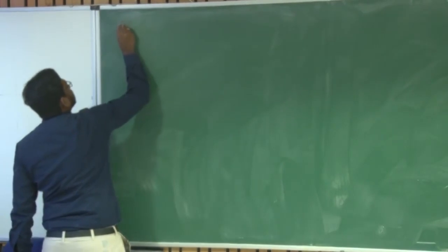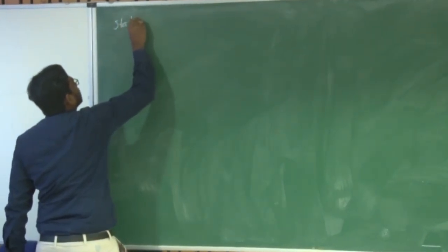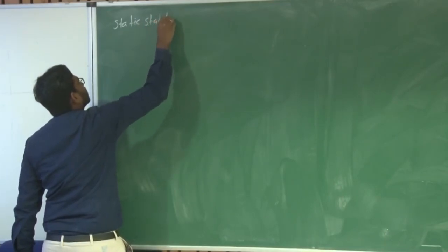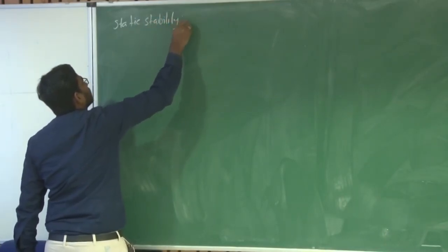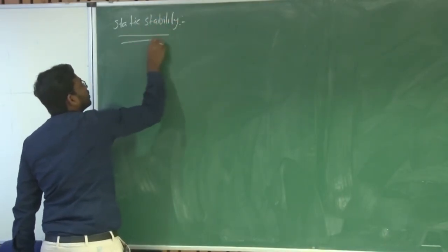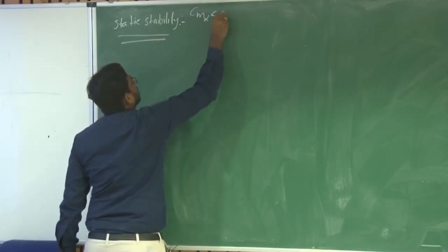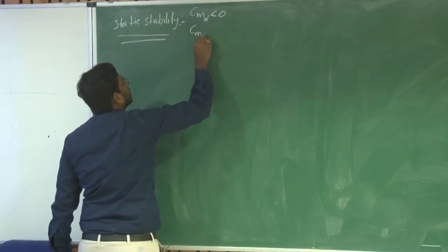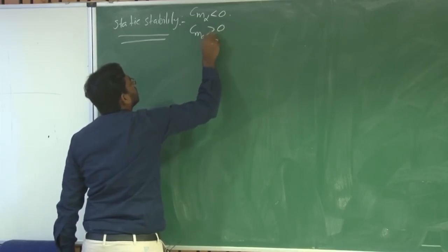So what is the condition and criteria for static stability? CM alpha has to be less than zero, so CM naught will be greater than zero.